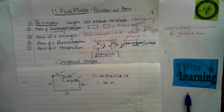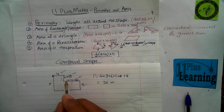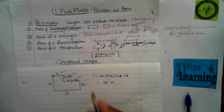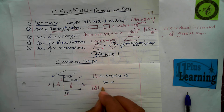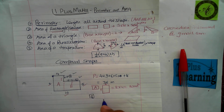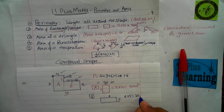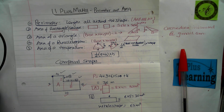To find the area of this compound shape, we split it into two rectangles. Section A is 8 × 4 = 32 m². Section B is the remaining rectangle: 6 × 5 = 30 m². The total area of the whole shape is 32 + 30 = 62 m².